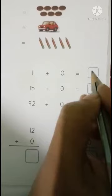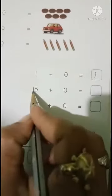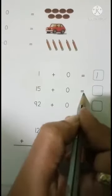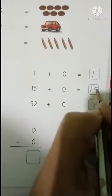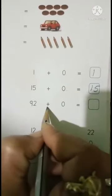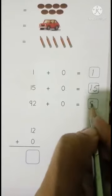Next children, 1 plus 0 equals 1. 15 plus 0 equals 15. 92 plus 0 equals 92.